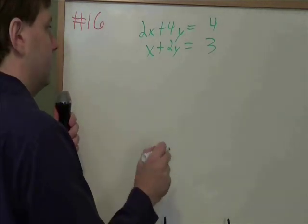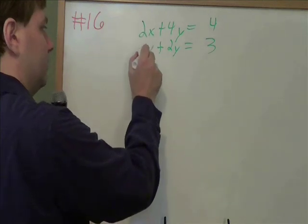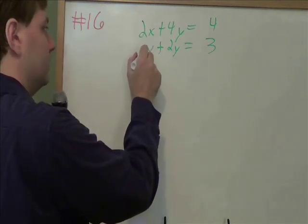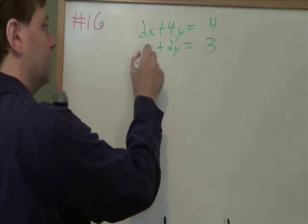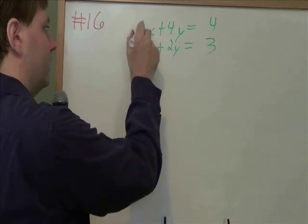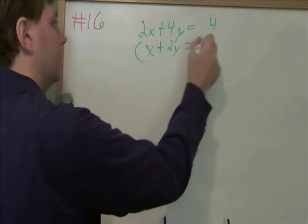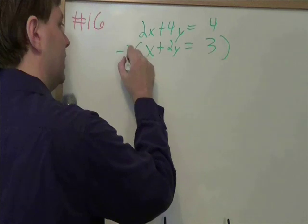So we pick any letter to eliminate. I'm going to pick x because I've got an x by itself. That usually means it'll be easier. So to eliminate x, I need to make sure that I have opposite x's. To do that, I can multiply this whole line by negative 2.